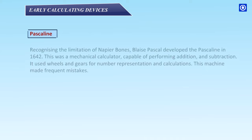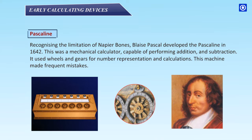Pascaline: Recognizing the limitation of Napier Bones, Blaise Pascal developed the Pascaline in 1642. This was a mechanical calculator capable of performing addition and subtraction. It used wheels and gears for number representation and calculations. However, this machine made frequent mistakes.